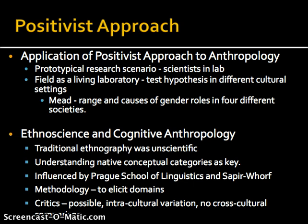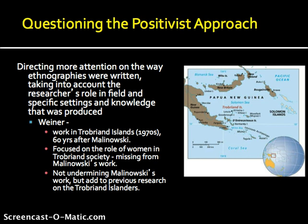Other critiques of positivism point to the fact that many early positivists framed their research as being both omnipresent and omniscient — as if the researcher was everywhere at once and knew everything about what was going on. Werner's more recent work amongst the Trobriand Islanders focused on women, while Malinowski's focused on men, and they produced very different accounts of Trobriand Island society. This illustrates that having multiple positions of ethnographers — male and female — studying a society helps get a larger picture overall.